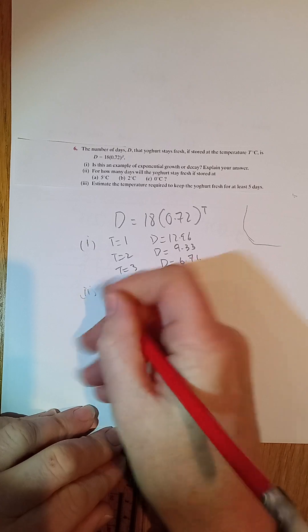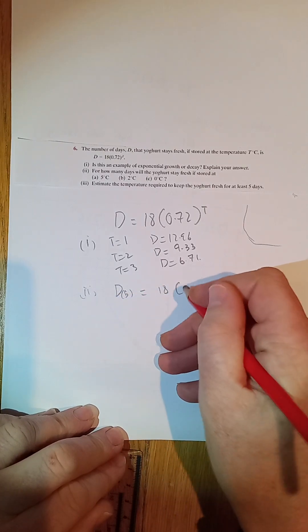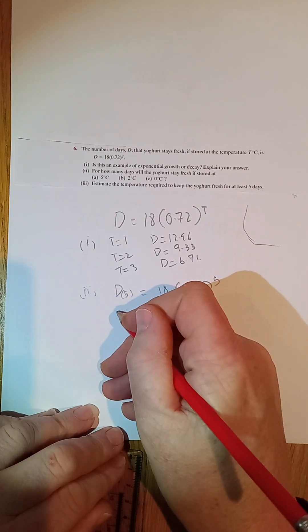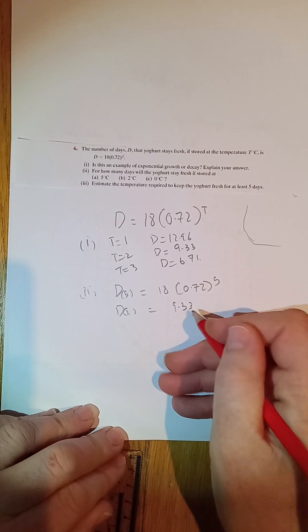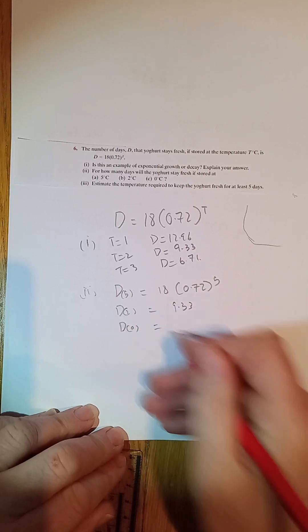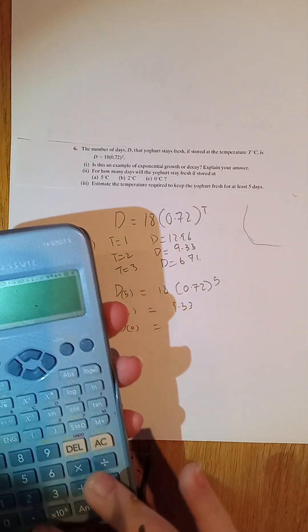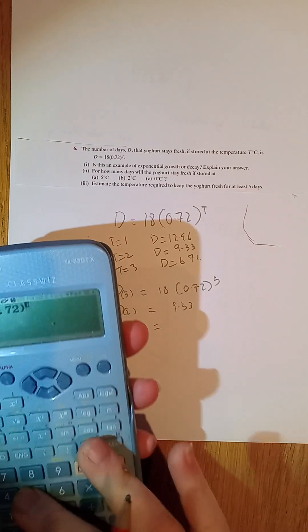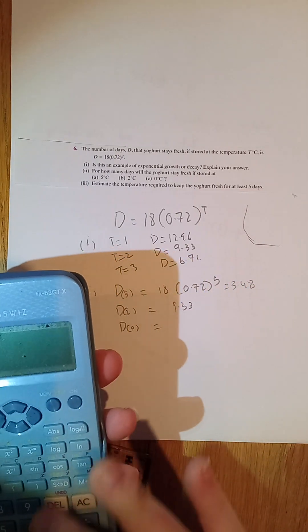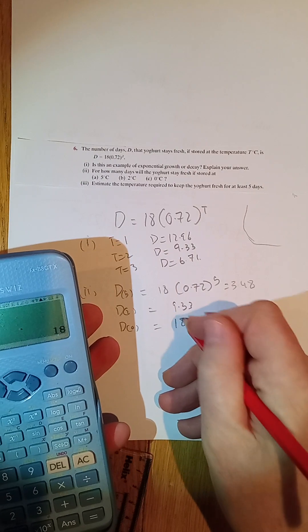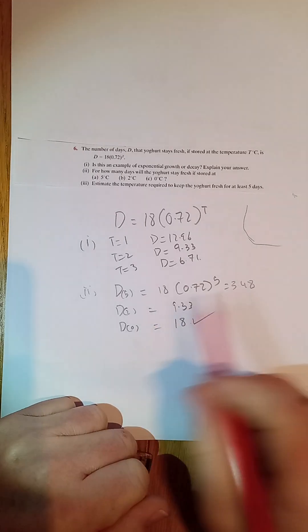So how many days would it be at 5? At 5, that's 18 times 0.72 to the power of 5. At 2, we already know what that is, 9.33. And at 0, let's work that one out. 18 bracket, 3.48 days. And make it 0, 18 days. So obviously, the lower the temperature, the longer it lasts.